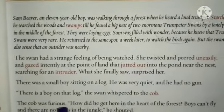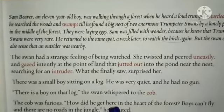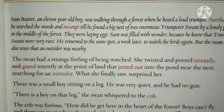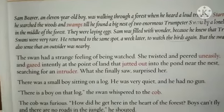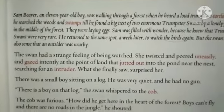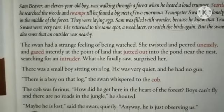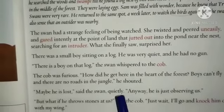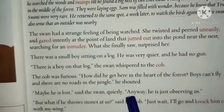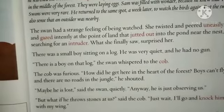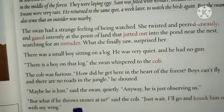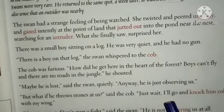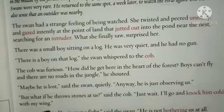The cob was furious. 'How did he get here in the heart of the forest? Boys can't fly and there are no roads in the jungle!' he shouted. 'Maybe he is lost,' said the swan quietly. 'Anyway, he is just observing us.' 'But what if he throws tools at us?' said the cob. 'Just wait — I'll go and knock him cold with my wing!'